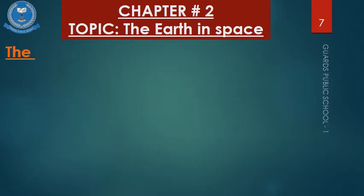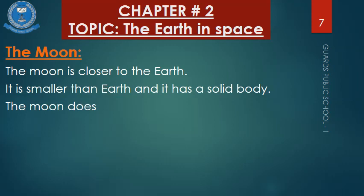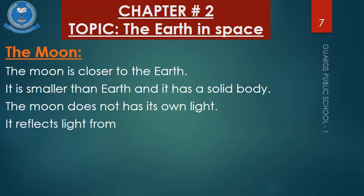Now, the Moon. The moon is closer to the Earth, it is smaller than Earth, and it has a solid body. Moon jo hai woh hamare planet Earth se nazdeek hai aur chhota bhi hai. The moon does not have its own light — it reflects light from the sun. Isi wajah se raat ko bhi jab hum moon ko dekhte hain to woh chamakta hua nazar aata hai.